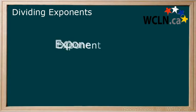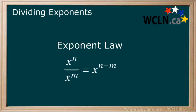This gives us our next exponent law. x to the power of n divided by x to the power of m equals x to the power of n minus m.